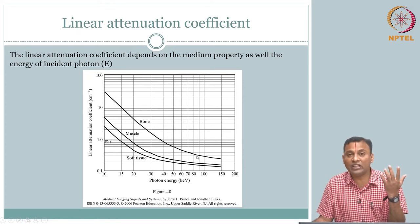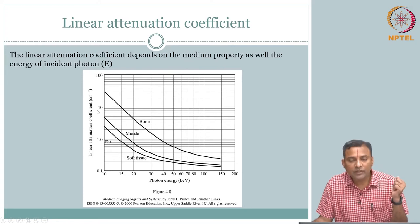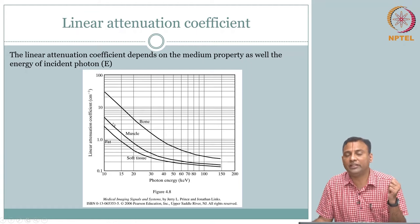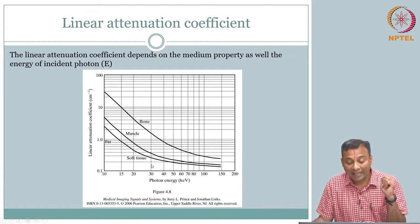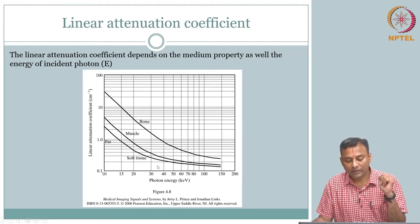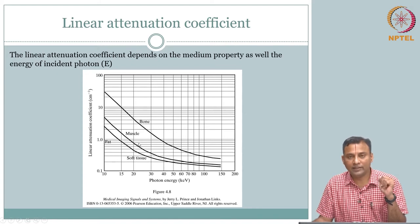When I say the difference between different materials, the concept that should come to mind is contrast. The inherent contrast between bone, muscle, and fat — in terms of their linear attenuation coefficient — reduces as you start to use higher energy. Clearly, you may want to use lower energies where the separation between them is larger.